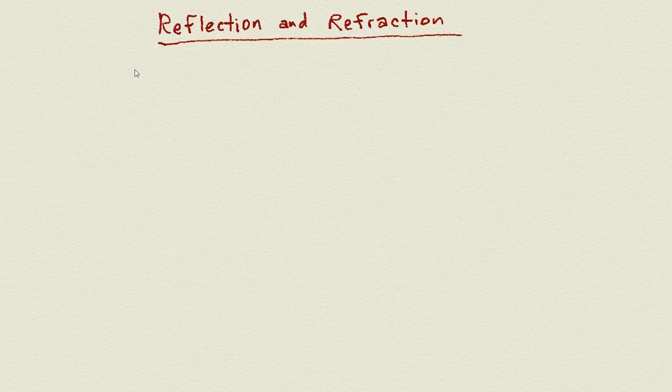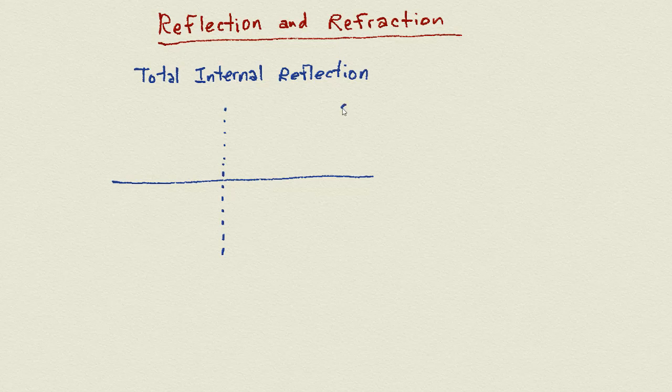The next topic I want to discuss is an idea called total internal reflection. When a light ray moves from a slow medium back into a fast medium, the light ray would be bent away from the normal. So if this is angle 1 and this is angle 2, we're going to see angle 2 is bigger than angle 1. It's just the reverse of going from fast to slow.